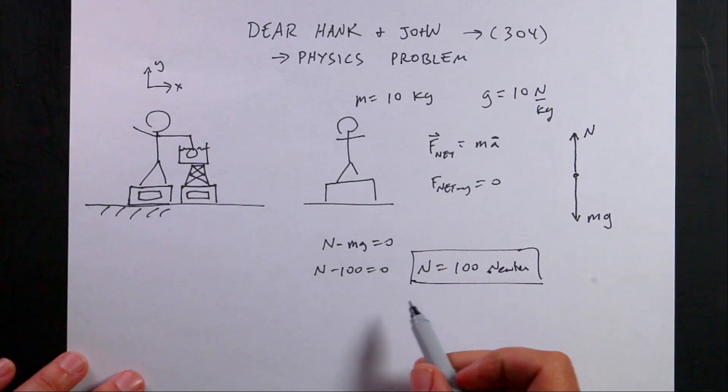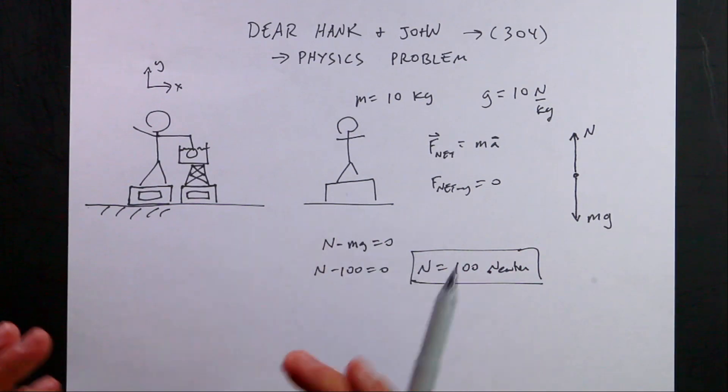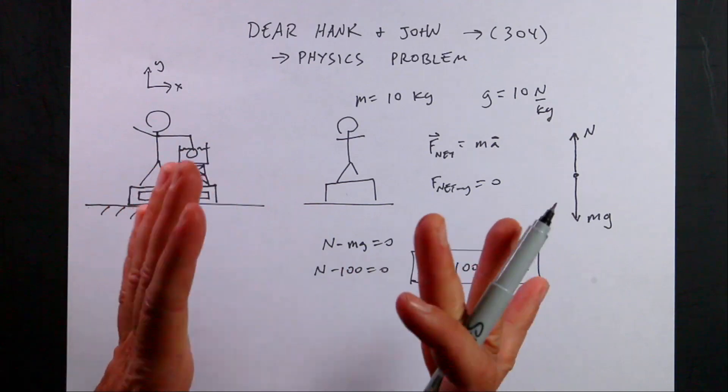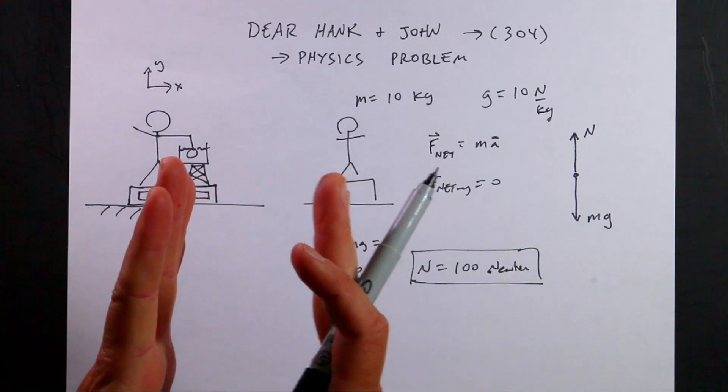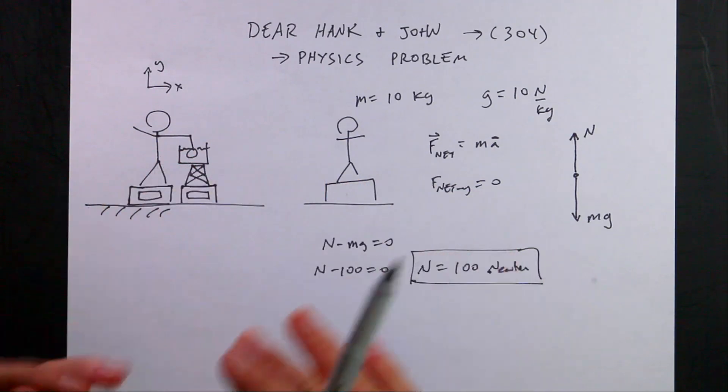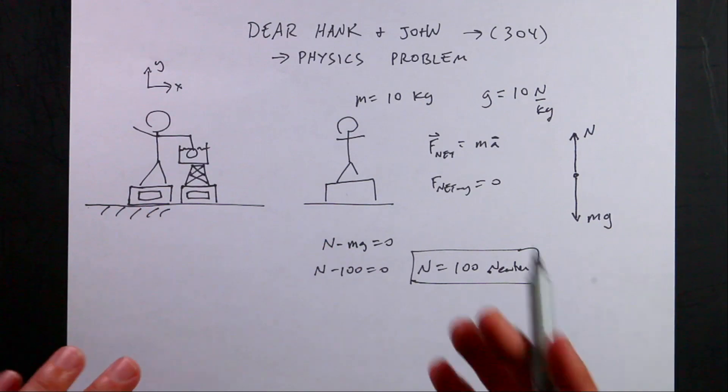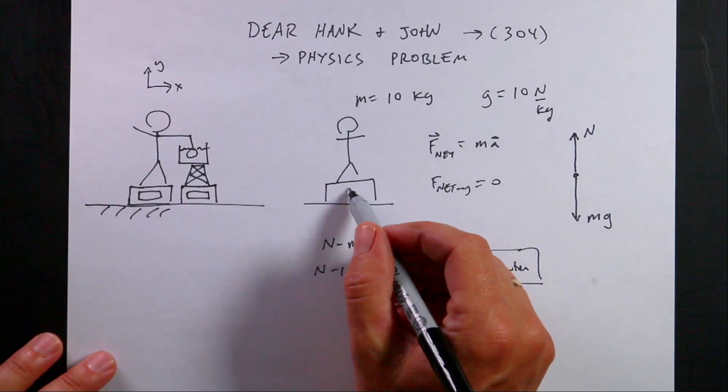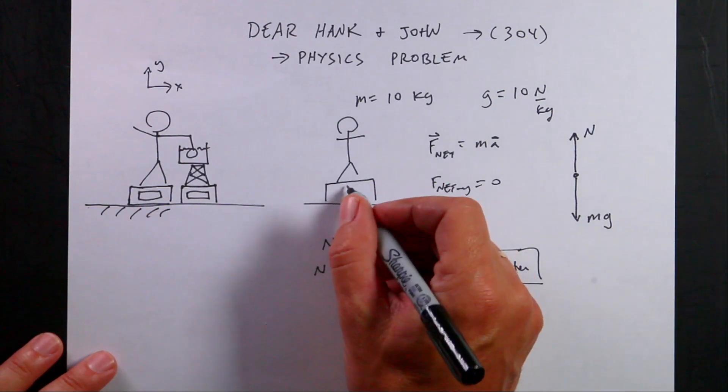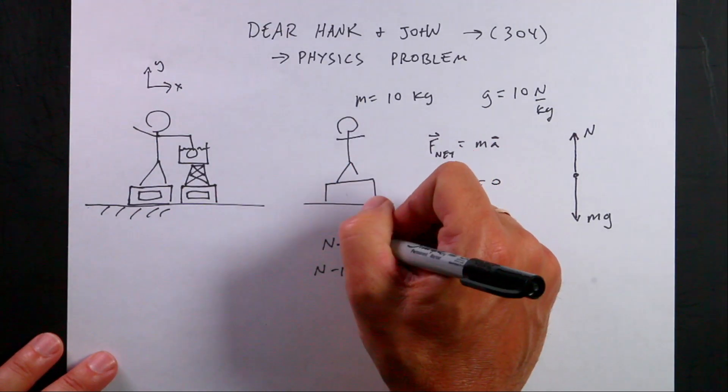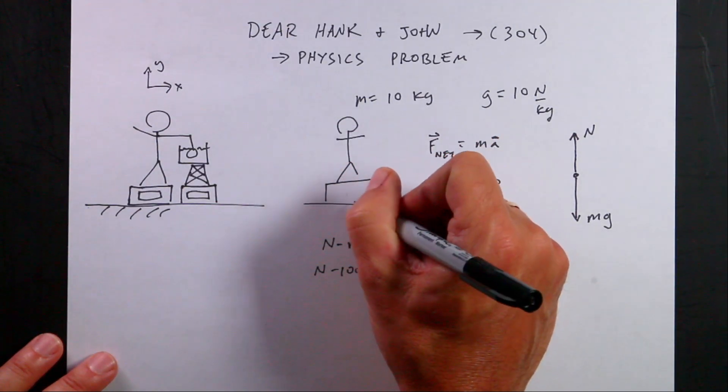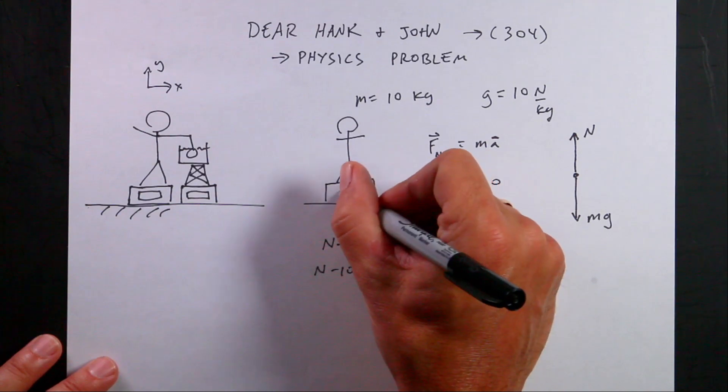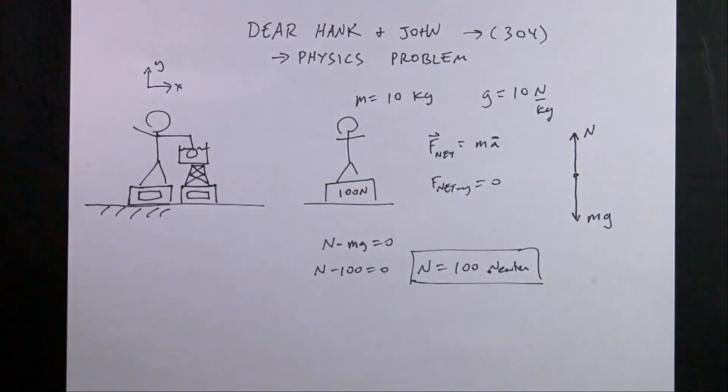The way the scale works is an old type of scale would have a spring, and the more that spring is compressed, the dial turns. But the point is whatever force the scale pushes up is the same as the person pushes down because the scale is also at rest. So this would read 100 newtons.